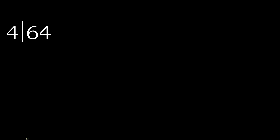60 divided by 4. 6 is not divisible — let's work with 6. 4 multiplied by which number is nearest to 6 but not greater? 4 multiplied by 2 is 8, which is greater. Multiply by 1 is 4, which is not greater. So 6 minus 4 is 2.